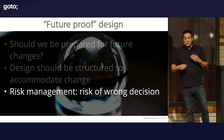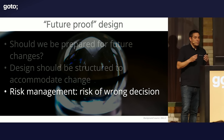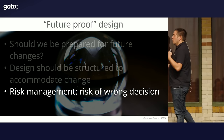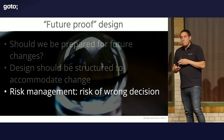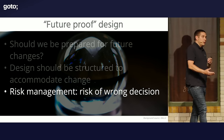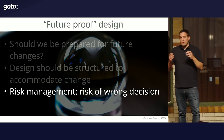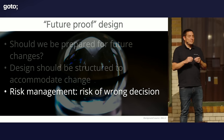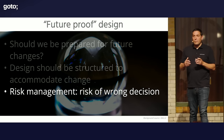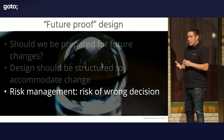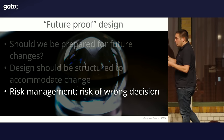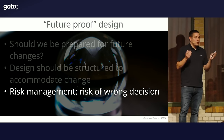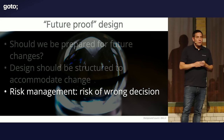I typically perform some sort of risk management when making a design choice. I think about: what's the risk of making a wrong decision? If it's a really fundamental decision and getting it wrong takes weeks, months, or years to fix — that's a high-impact decision requiring careful thought. If it's a decision I can revoke or reiterate in a day or a week, maybe I should just go with the first thing that pops into my mind.